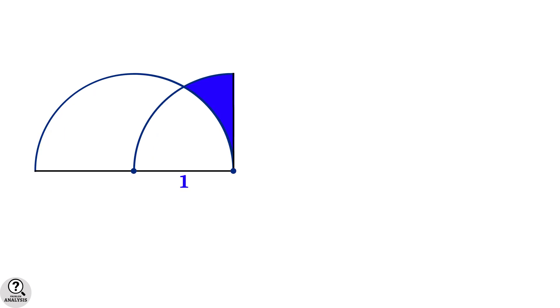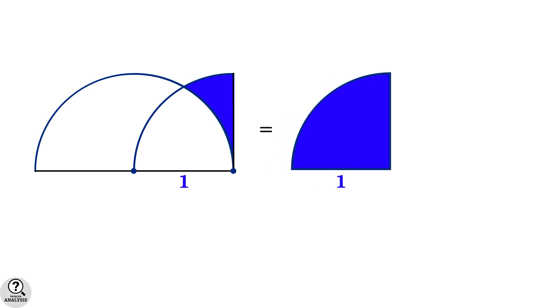Now closely observe the figure. We can see that the blue region is actually a quarter circle subtracted by this curved triangular shape. And the area of the quarter circle is 1 by 4 of the area of the complete circle, which is pi r square.